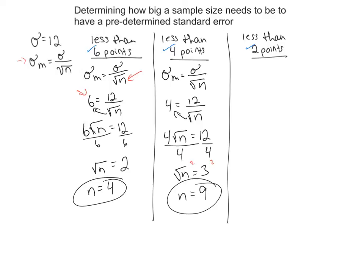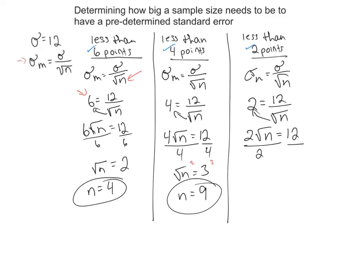Let's do one more and make our standard error really small — let's make it 2. Standard error equals standard deviation divided by the square root of n, so 2 equals 12 divided by the square root of n. Bring the square root of n over: 2 times the square root of n equals 12. Divide by 2 — square root of n equals 6. Squaring both sides gives n equals 36. So I would need 36 people in my study if the standard deviation is 12 and I want a standard error less than 2 points.